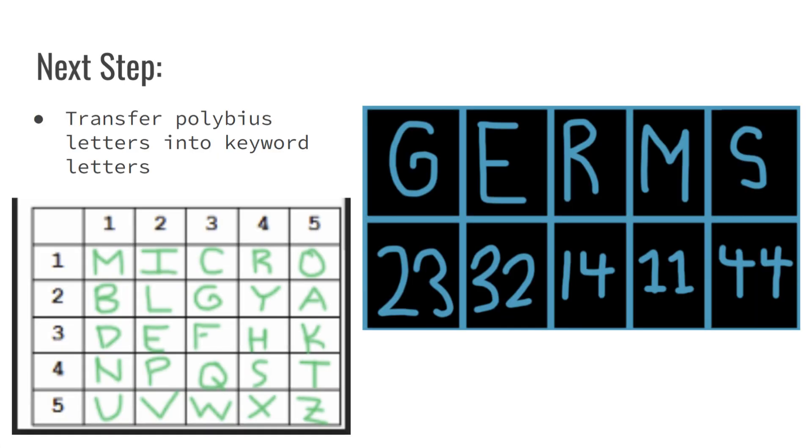Once we have our polybius square finished we will look at our keyword and match it to the letters that we have from the square. Since our keyword is germs we will find each letter that the two digit number codes to so we are going to have g as 23, e as 32, r as 14, m as 11 and lastly s as 44. We will usually write this to the side of the cipher and have each two digit number next to each letter.